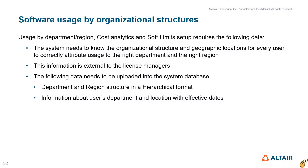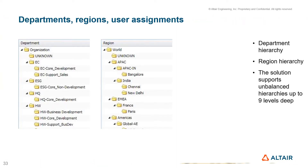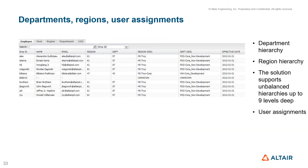The system needs to know the organizational structure for departments and regions with user assignments, allowing SAO to provide usage roll-up and breakdown, cost analytics, and setting up of soft limits. Department and regional hierarchies need to be uploaded into the SAO database. Users assigned to regions and departments with effective dates allows for correct allocation of usage to regions and departments.